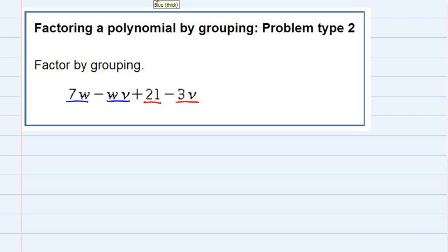Now out of the first two, the 7w and the wv, they have a common factor that can be factored out and that's a w. So if I factor it out, what would be left?